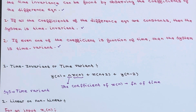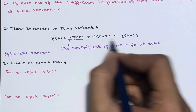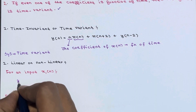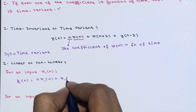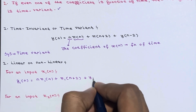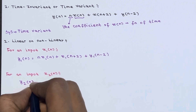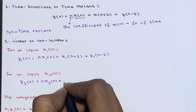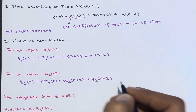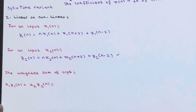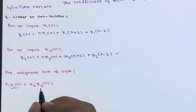Now let us check whether the system is linear or non-linear. For an input x1(n), the output y1(n) = n·x1(n) + x1(n+2) + y1(n−2). For an input x2(n), y2(n) = n·x2(n) + x2(n+2) + y2(n−2). We need to calculate the weighted sum of outputs: a1·y1(n) + a2·y2(n).